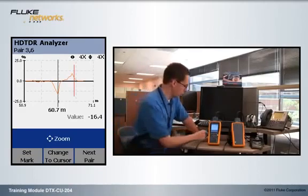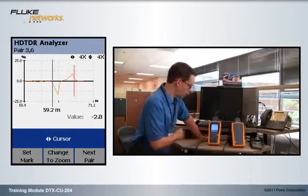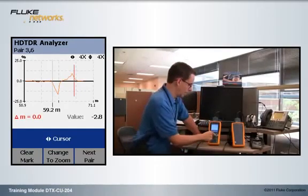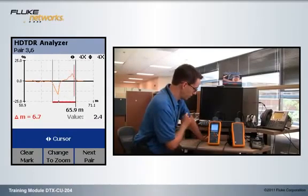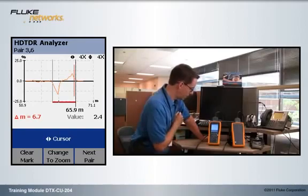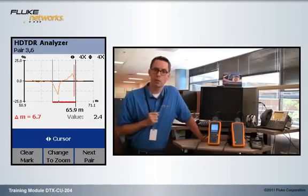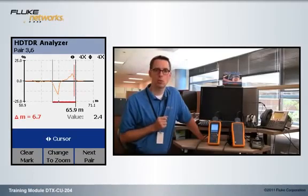So, here's what we can do. We'll take it off zoom mode. We'll move the cursor to where this starts. We'll set the marker, and then we'll move to where it ends. I would say roughly about there. Indicating that we have about 6.7 meters of cable at the end of the link, which has water in it.